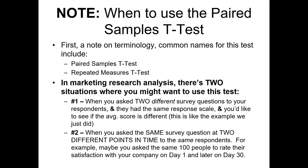Now another scenario, which is different and not shown in this video, is when you ask the same exact survey question at two different time points to the same set of respondents. An example of this might be if you asked 100 people to rate their satisfaction with your company on day one, and then on day 30, those same exact 100 people rated their satisfaction level with your company. That's what I mean by same individuals and same question, but at two different points of time.